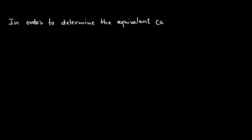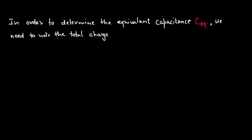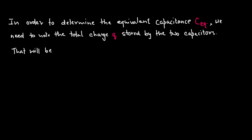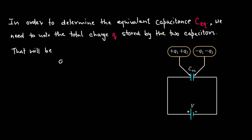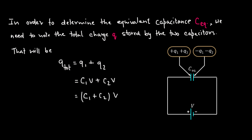In order to determine the equivalent capacitance C_equivalent, we need to note the total charge Q stored by the two capacitors. That will be Q_total equals Q1 plus Q2. Replacing Q1 and Q2 with C1·V plus C2·V and taking V as the common factor, we have (C1 plus C2) multiplied by V, and C1 plus C2 is C_equivalent times V.